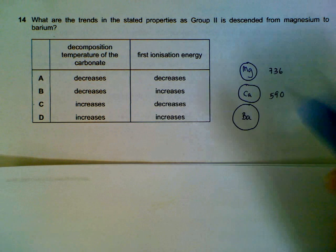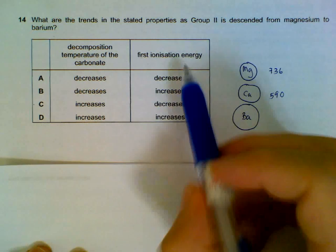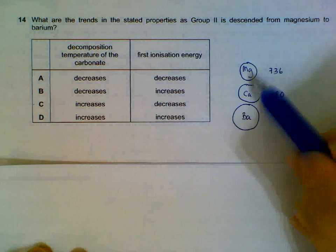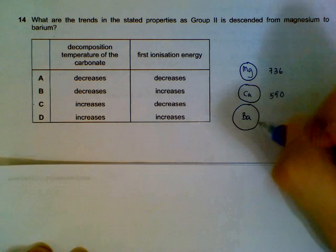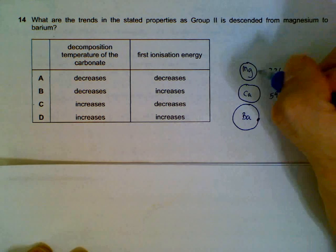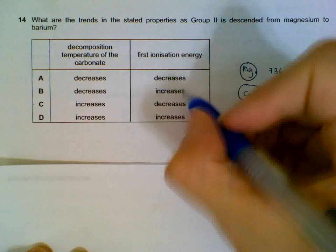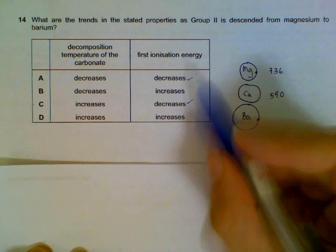Question 14: Trends in Group 2. As we go down the group, the ionization energy will be easier because as the atom gets larger, it's easier to remove the outer electrons compared to a smaller atom. So the ionization energy decreases. That will narrow down the options.